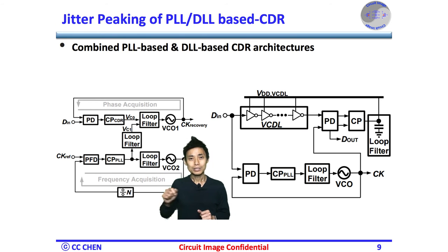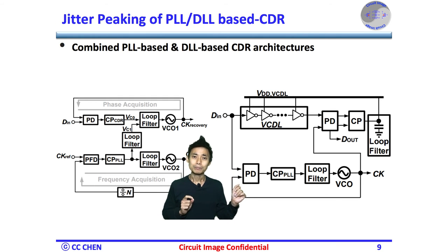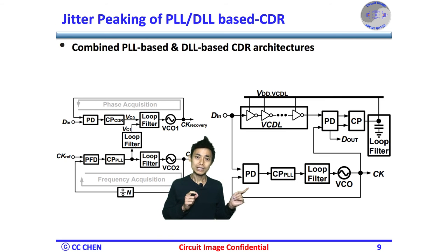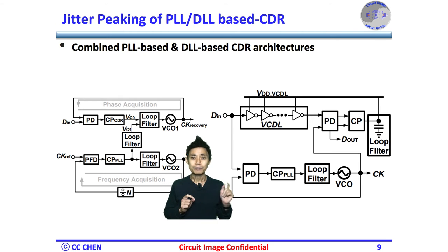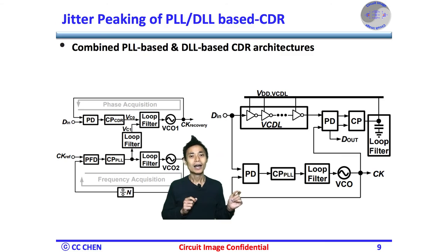By reducing the PLL loop bandwidth, the jitter peaking can be minimized, but the acquisition time is increased. Fortunately, the DLL-based CDR can achieve low acquisition time and jitter peaking at the same time compared to the PLL-based CDR. For example, the frequency-tracking PLL would not provide a cross-loop zero and jitter peaking. With the combined PLL-based and DLL-based CDR, the PLL can also maintain a small loop bandwidth without compromising acquisition speed. Both the DLL-loop dynamics and the PLL performance can be decoupled, at the starting cost of requiring dual charge pumps and loop filter.